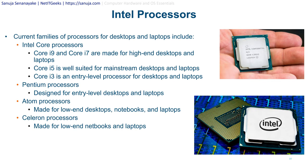Current Intel Core processor families for desktops and laptops include the i9 and i7, made for high-end desktops and laptops; the i5, well-suited for mainstream desktops and laptops such as office computers; and the i3, an entry-level processor. Some companies use i3 processors for end users who don't need high processing power, allowing some cost savings.